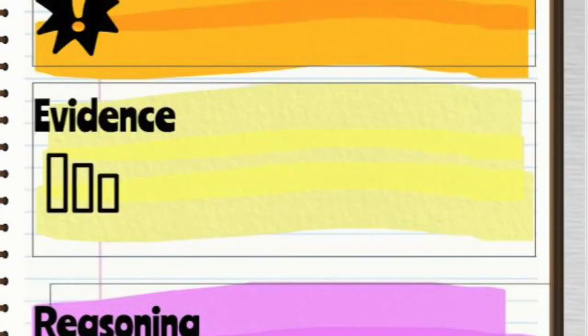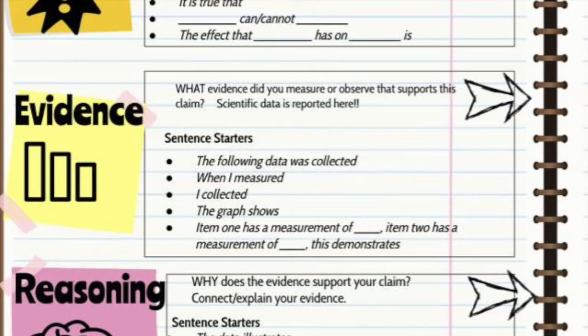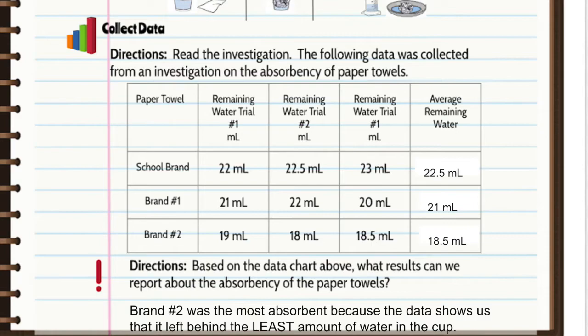Next, we move on to the evidence. This data chart shows all of the evidence that we collected during our investigation. This data needs to be reported in the evidence section in sentences. On the left side of your page, I've given you some sentence starters to help you. Here's the data that we collected on our investigation. You might want to pause this video so you have the data handy while you're typing up this evidence.